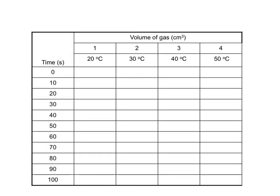You'd collect your results in a table like this. Maybe at 20 degrees we'd start off at 0 on the syringe, and then maybe after 10 seconds we'd get 10 cubic centimetres, then 19, then 27, then 35, then 40.